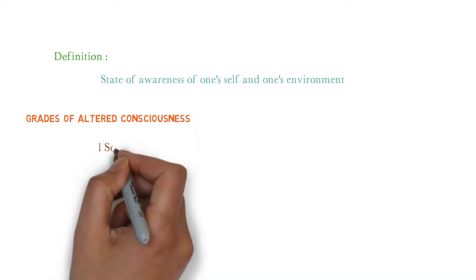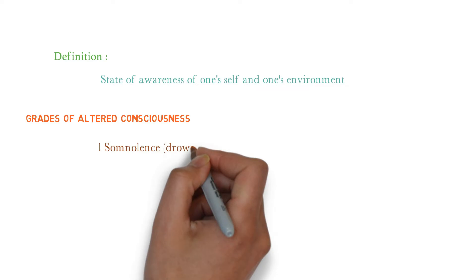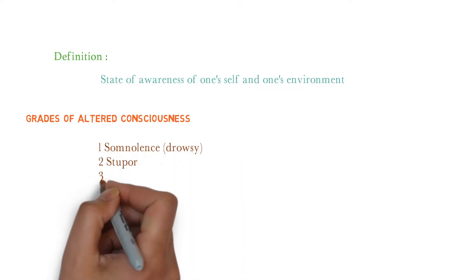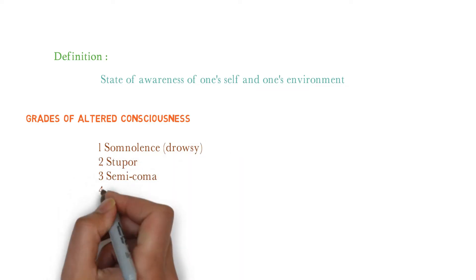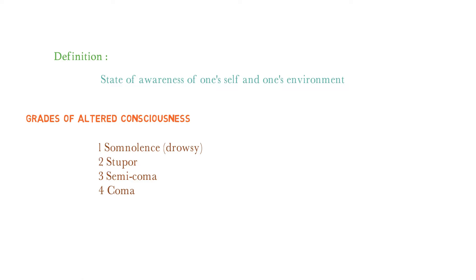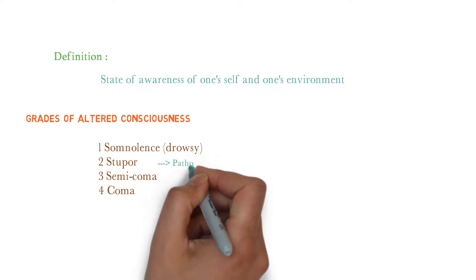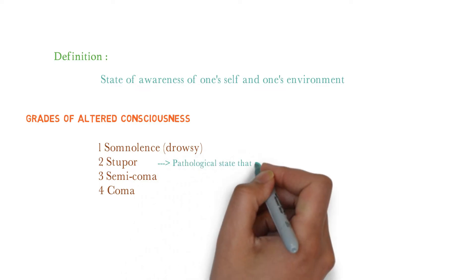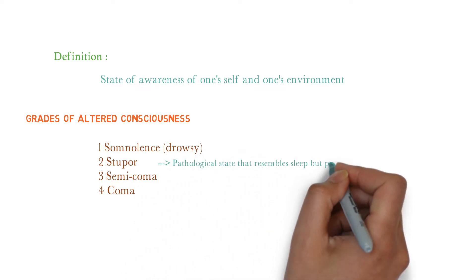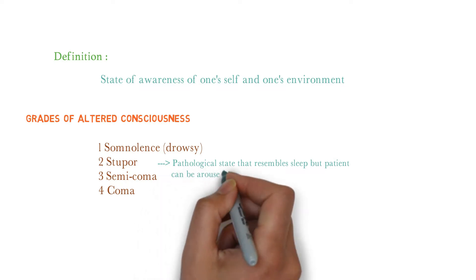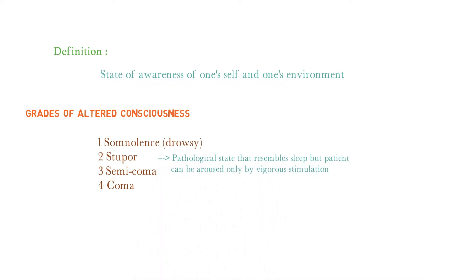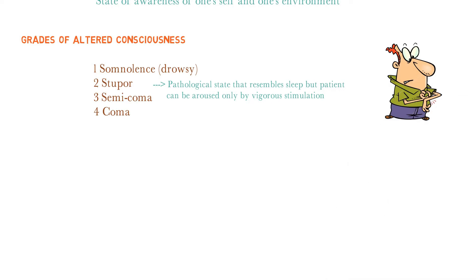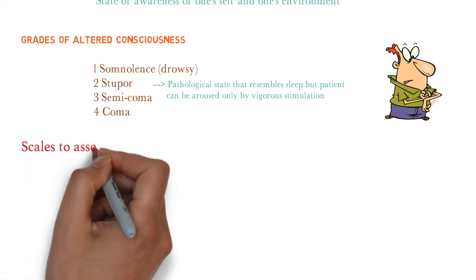The first grade is somnolence, also called drowsy. The second is stupor. The third is semi-coma, and the fourth is coma. The examiner may ask: what is stupor? Stupor is a pathological state that resembles sleep, but the patient can be aroused only by vigorous stimulation — that is, painful stimulation, for example pinching or supra-orbital pressure. After answering this, the examiner will definitely ask about scales to assess the level of consciousness.